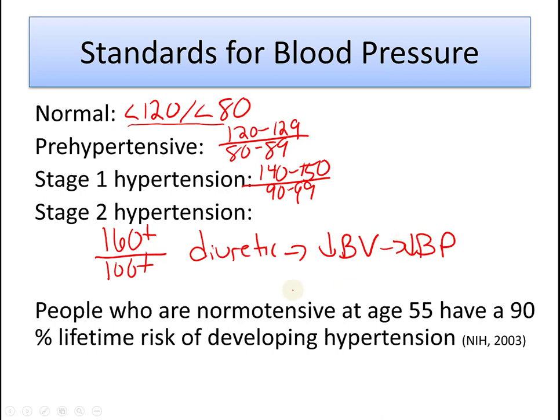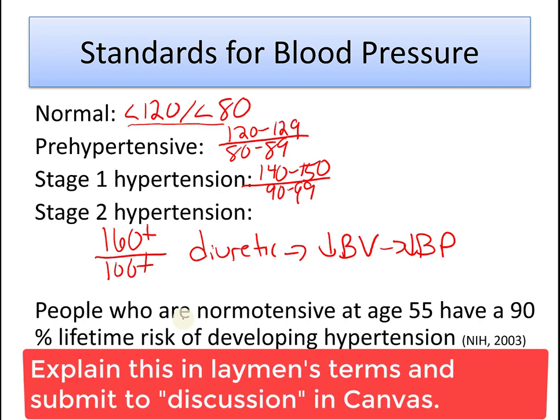Now that you are all experts about blood pressure, I would like you to interpret this statement and translate it into layman's terms as part of your assignment: 'People who are normotensive at age 55 have a 90% lifetime risk of developing hypertension.' This is according to the National Institute of Health. Please explain what that means and submit it on Canvas.